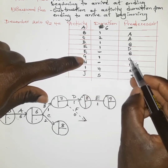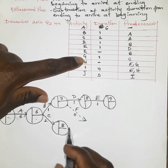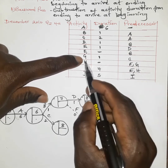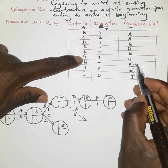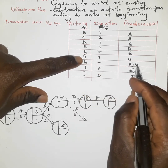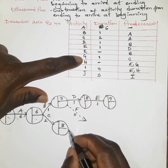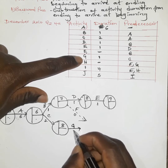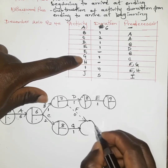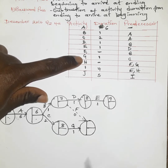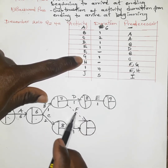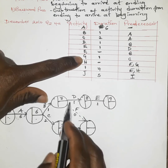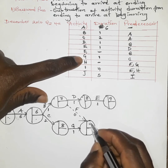G depends on C, meaning G will begin as soon as C ends. The same G affects H — so the point where F and G complete is where H will begin. We have G taking a duration of one week. In this scenario, activity F takes seven plus zero, which is seven. Activity G takes eight plus one, which is nine. In forward pass, we take the activity with the longest duration, which is nine.